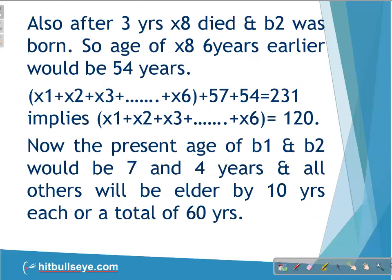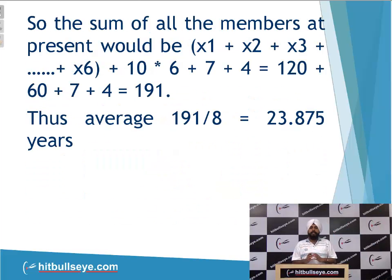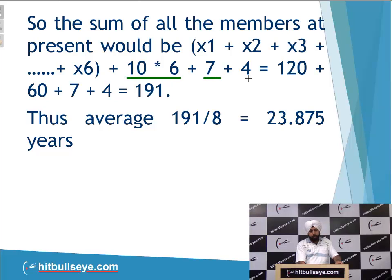Moving on, three more years later, X8 died and B2 was born. The age of X8 six years earlier will be six years less than 60, that is 54 years. If you add the ages of all eight members 10 years ago, it comes to 231. Excluding those two members, their combined age comes to 120. The present ages of the two children born in between must be seven and four years, and the others will each be 10 years older. So the sum of all members at present comes to 191, and the average comes out to be 23.875.